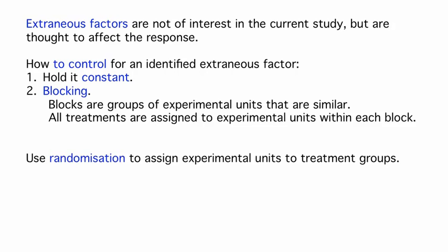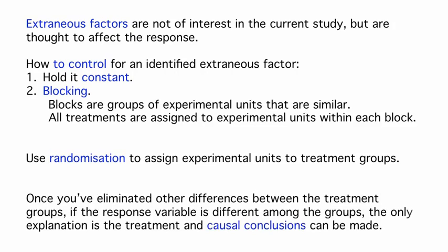After randomization, when we average out this chance variation, the treatment groups are essentially the same. Once we have a randomized experiment to compare treatments, we have a study for which, if we observe differences among the treatment groups, we can conclude that it was the different treatments that caused the difference in the response. The idea here is that we've eliminated any other differences between the groups, so if the response variable is different, the only explanation is the different treatments, and cause and effect conclusions can then be made.